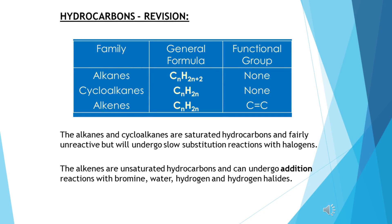This topic begins with hydrocarbons, which is revision for the majority of you. There are three different homologous series you should be aware of — a homologous series being a family of compounds with the same general formula and similar chemical properties. The three families are the alkanes, the cycloalkanes, and the alkenes. The alkanes and cycloalkanes are saturated hydrocarbons because they contain only single carbon-to-carbon bonds, whereas the alkenes are unsaturated because they contain at least one carbon-to-carbon double bond.